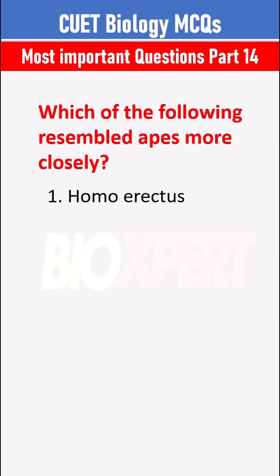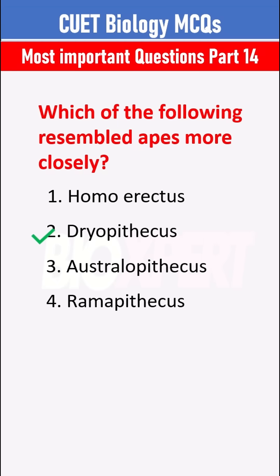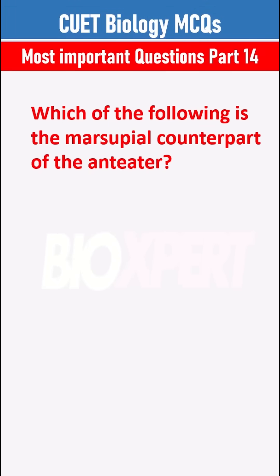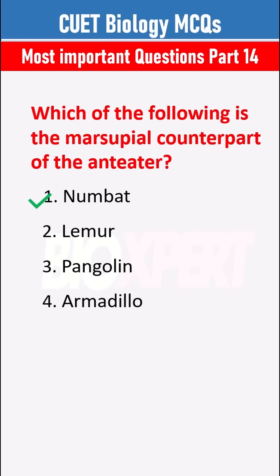Which of the following resembled apes more closely? Dryopithecus. Which of the following is the marsupial counterpart of the anteater? Numbat.